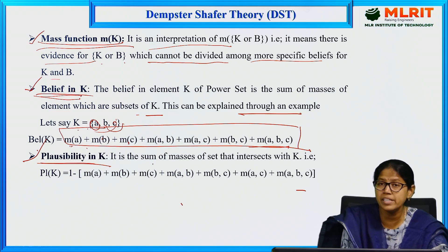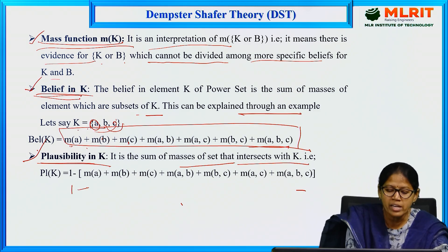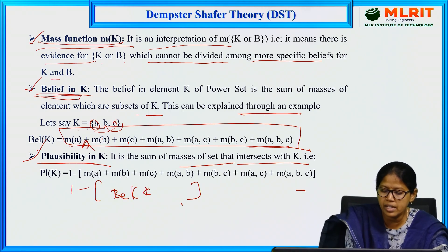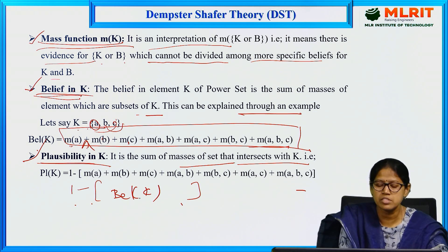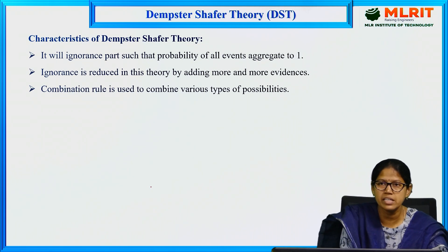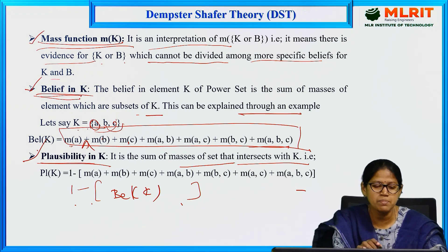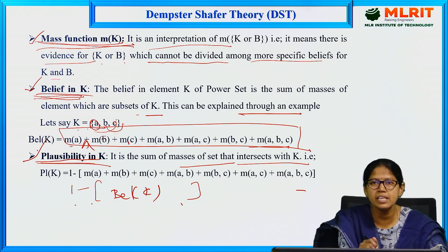Plausibility is the sum of masses of sets that intersect with k, which means 1 minus the sum of belief of the complementary set. Plausibility is 1 minus belief. The important terms in Dempster-Shafer theory are mass function m(k), belief in k, and plausibility in k.